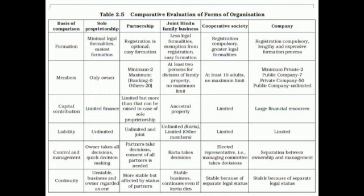So this is the comparison between sole proprietorship, partnership, joint Hindu family business, cooperative society, and company. From this chart, you can clearly understand all five forms of business organization and the differences between them.